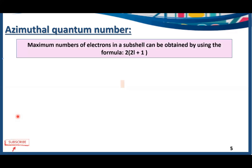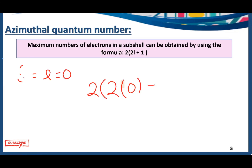The maximum number of electrons in a subshell can be obtained by using the formula 2(2l + 1), where l is the azimuthal quantum number. For s, l equals 0: 2 × (2×0 + 1) = 2 × 1 = 2. So we can accommodate two electrons in the s subshell.